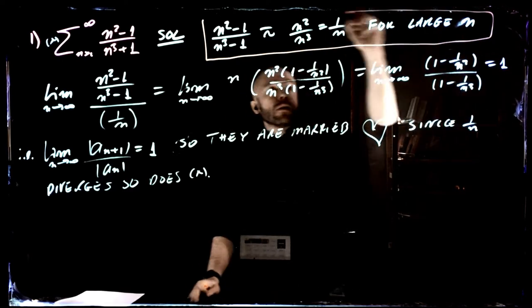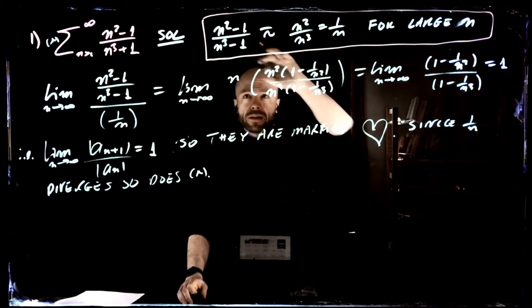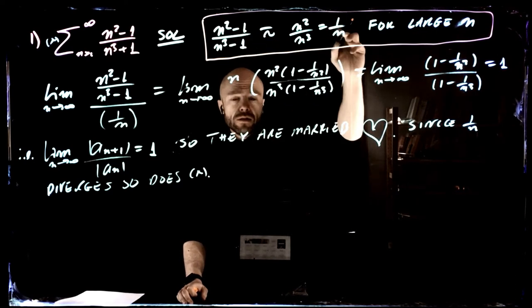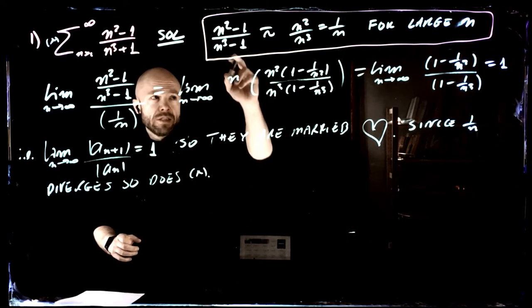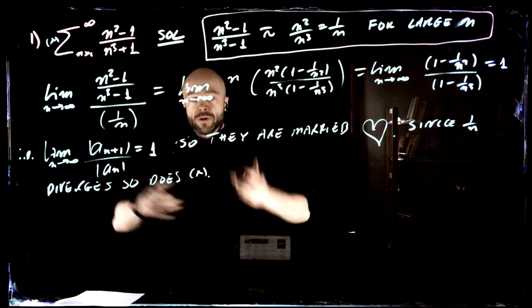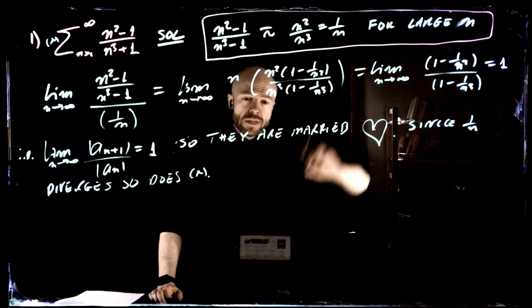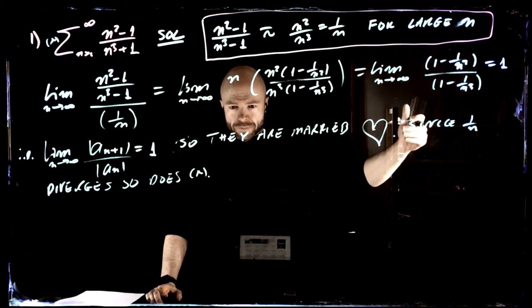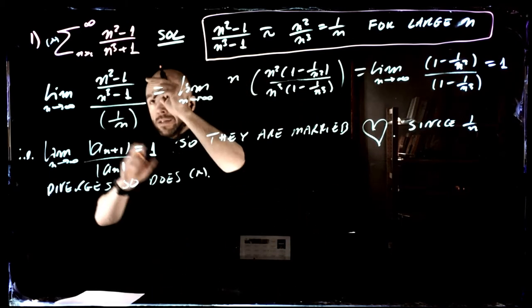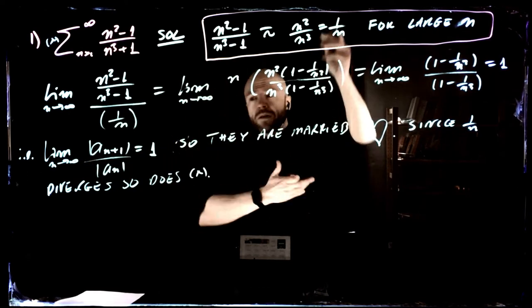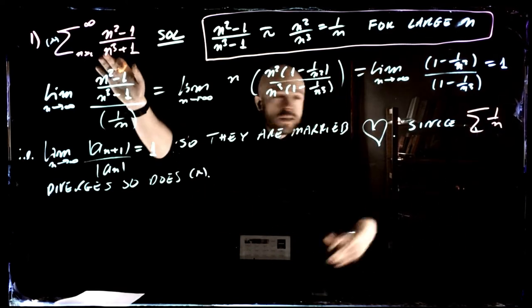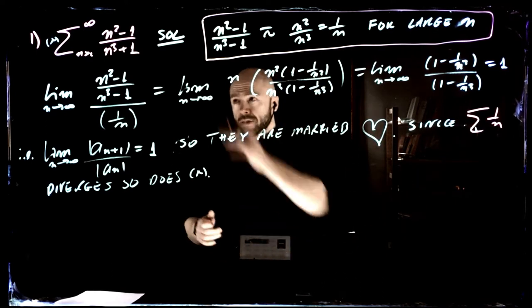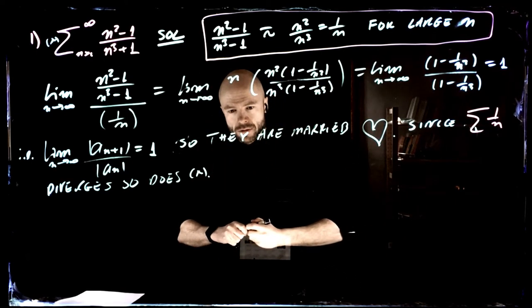You need to explain more about why the fact that this sequence is very much like 1 over n allows you to conclude divergence. When we say this thing is like this thing, we have a more precise formulation: the ratio of these terms tends to some limit which is not equal to 0. That's strong enough information to say this series is married to 1 over n, and therefore since 1 over n diverges, this series diverges.